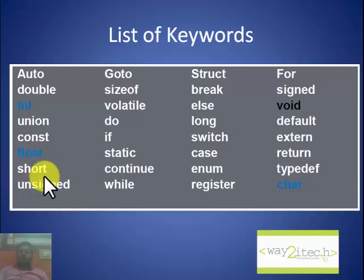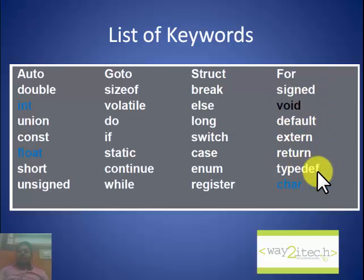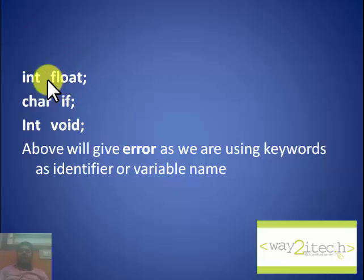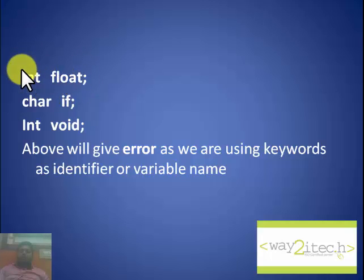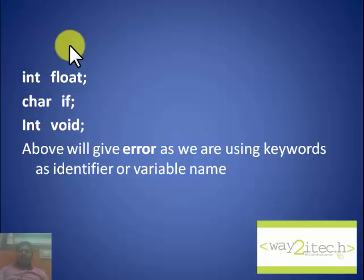The 32 keywords in C are: auto, double, int, union, const, float, short, unsigned, goto, sizeof, volatile, do, if, static, continue, while, struct, break, else, long, switch, case, enum, register, for, signed, void, default, extern, return, typedef, char. For example, we cannot name a variable 'float', 'if', or 'void' because these are keywords. Using keywords as variable names will cause an error.